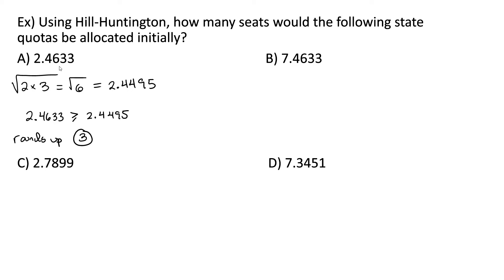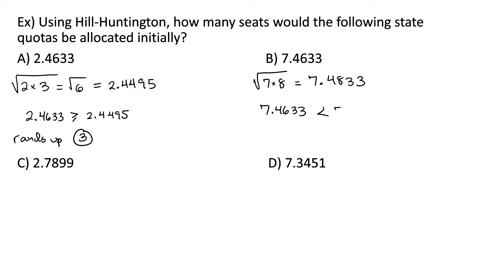Now let's take a look at part B. First we would need to find the geometric mean of 7.4633. We take the square root of 7 times 8, which works out to be 7.4833. So 7.4633 is less than its geometric mean of 7.4833, so it would round down to 7.